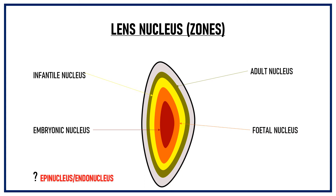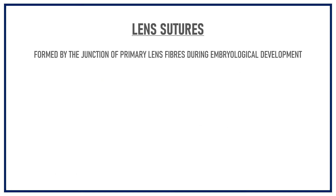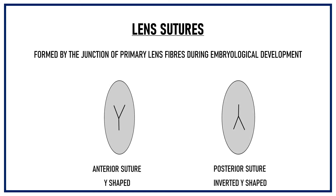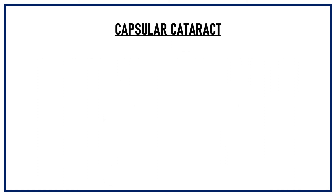You must have also heard of the terms epinucleus and endonucleus. We use these terms when we discuss the surgical zones of a cataract. While talking about morphological classification, they don't hold any relevance. Lens sutures are formed by the junction of the primary lens fibers during development. There is an anterior suture which is Y-shaped and a posterior suture which is inverted-Y in shape. If you are able to understand this structure of the lens, the morphological classification becomes quite straightforward.